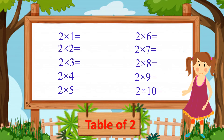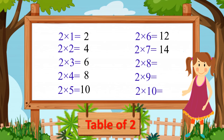So Sara, let's repeat it one more time, and this time we will write on the board. Let's start: Two ones are two. Two twos are four. Two threes are six. Two fours are eight. Two fives are ten. Two sixes are twelve. Two sevens are fourteen. Two eights are sixteen. Two nines are eighteen. And two tens are twenty.